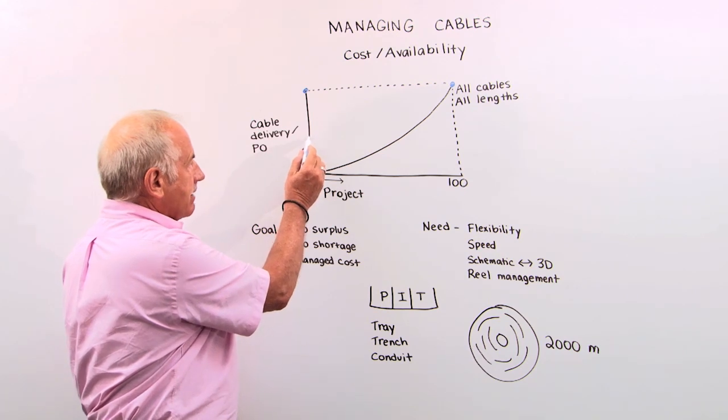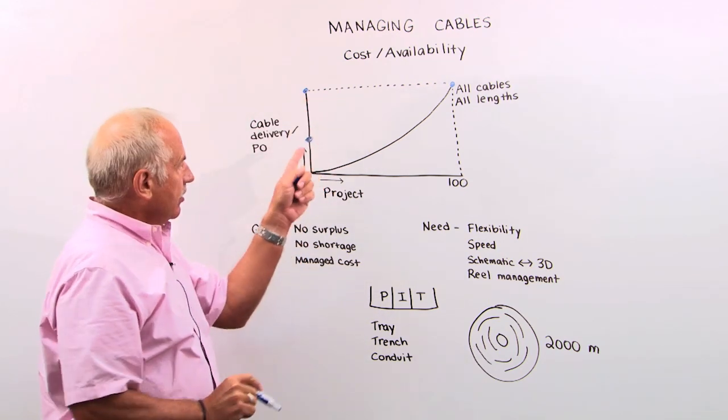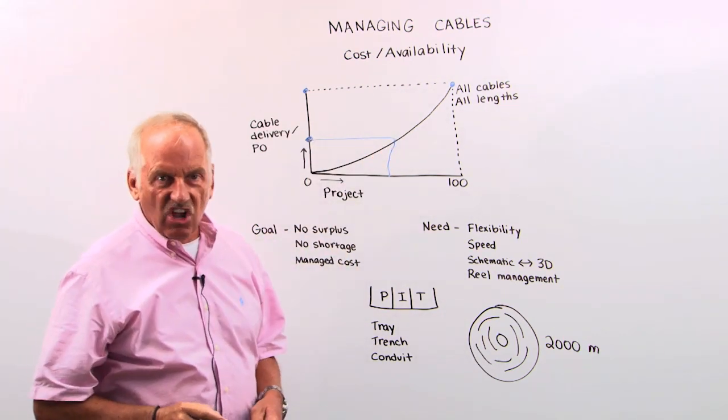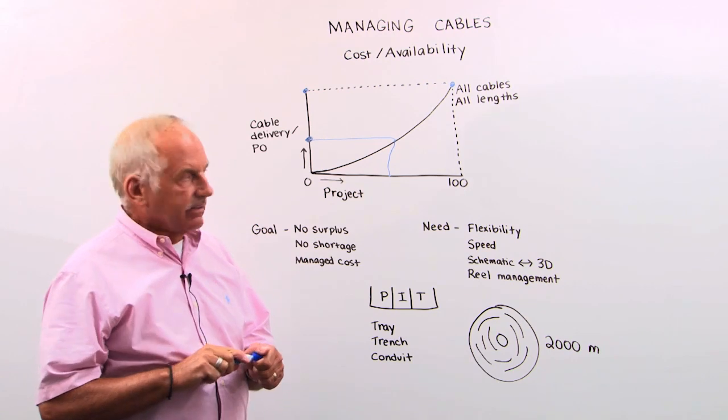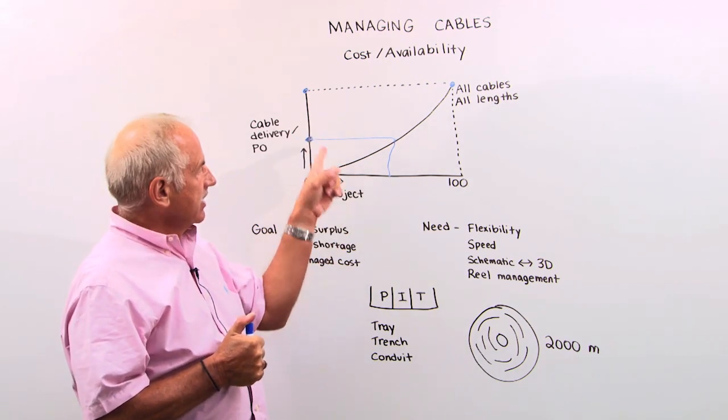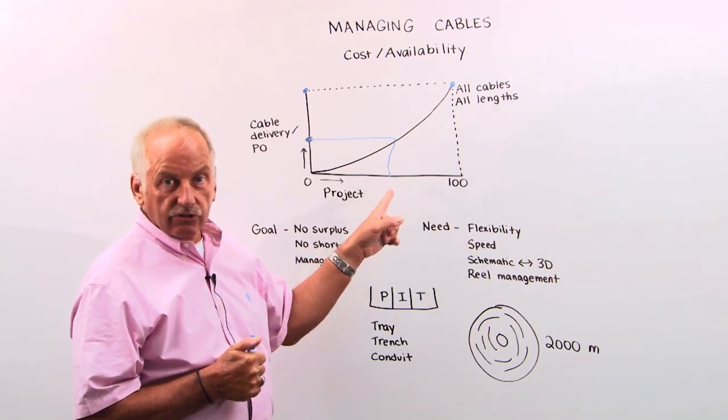So you cannot wait to the last minute. So sometimes you have to order, like here, in order to get them here. Unfortunately, the project is not yet done. So how do we handle that? How do we able to still order the right amount of cables to get on the end of the project while we're not done yet?